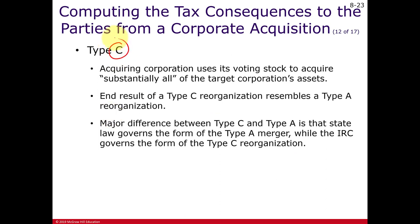In a Type C reorg, you're still trying to acquire the assets of the target corporation using the stock of the acquiring corporation, but now you're not following the rules of state merger and consolidation laws. Instead, you're following just the rules of the Internal Revenue Code, and again you can generally only use the stock of the acquiring corporation.